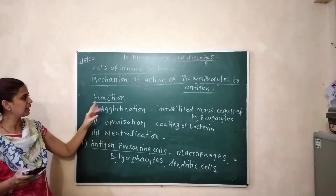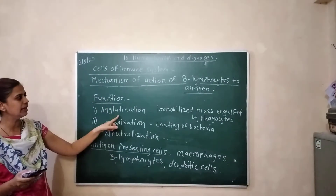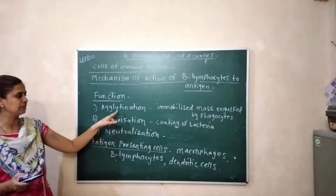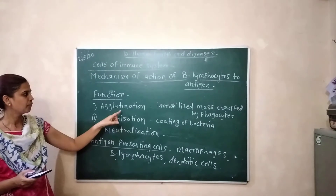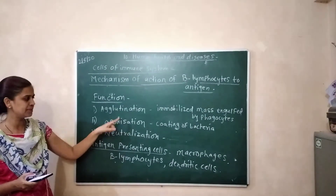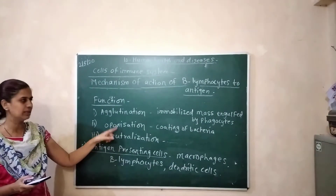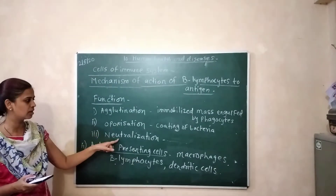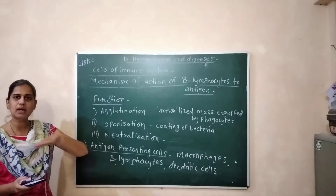Neutralization involves the toxins secreted by bacteria, such as tetanus toxin. The three functions of antibodies are agglutination, opsonization, and neutralization.